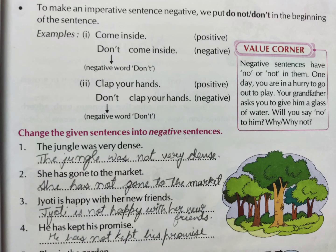To make an imperative sentence negative, we put 'do not' or 'don't' at the beginning of the sentence. For example, 'Come inside' becomes 'Don't come inside,' and 'Clap your hands' becomes 'Don't clap your hands.' So this is how you can make negative sentences in different cases: one verb, two verbs, and imperative sentences.